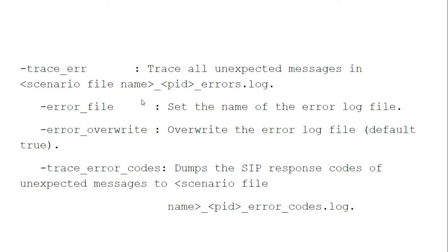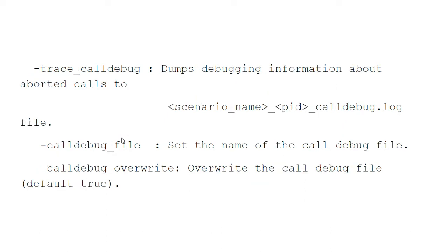Let's see the various CP commands useful here. The trace error command: if you enable trace error, errors will get logged. The default file name is like this — scenario file name, PID, then errors dot log. PID is the CP PID. If you want to change this default file name, you can put this argument and set the file name to whatever you want. Similarly, a trace error overwrite option is available — by default it's true, but you can make it false. Trace call debug also has options to set its own file name and an overwrite option.